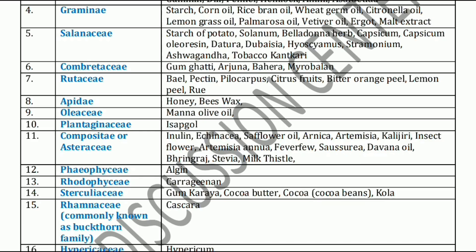Next family is Rutaceae family. Rutaceae family includes Bael, Pectin, Pilocarpus, Citrus fruits, Bitter orange peel, Lemon peel, and Rui. These are the Rutaceae family plants.